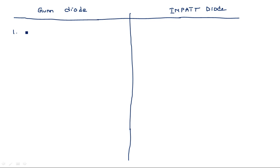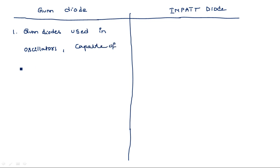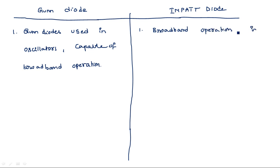First difference: Gunn diodes are used in oscillators and are capable of broadband operation. Whereas, for the IMPATT diode, broadband operation is not possible as compared to the Gunn diode.